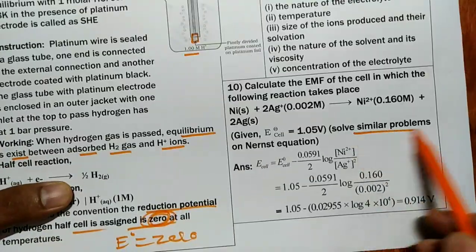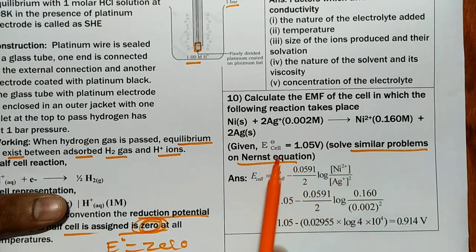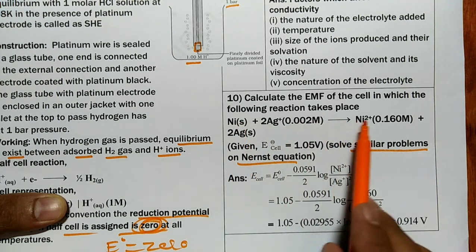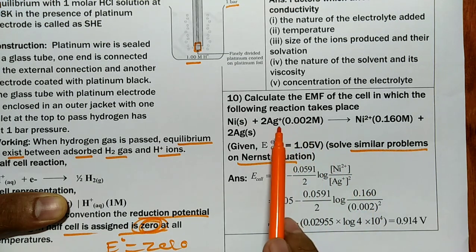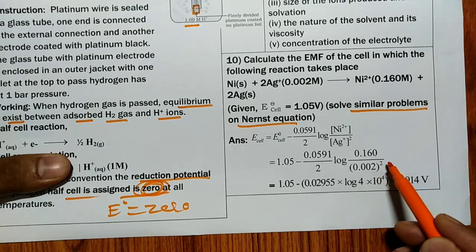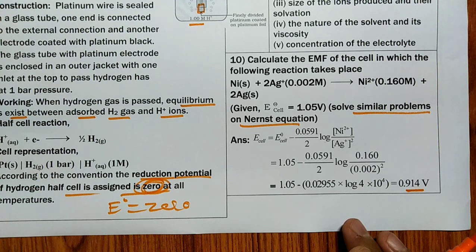Now, solving a Nernst equation problem — at least write the formula if you cannot solve the full problem. The Nernst equation formula is: E_cell = E°_cell − (0.0591/n) × log([oxidized form]/[reduced form]). For the given reaction with Ni²⁺ and Ag⁺: substitute [Ni²⁺] = 0.002 M and [Ag⁺] = 0.160 M (squared, since n = 2). After simplification, the answer is 0.914 volt.